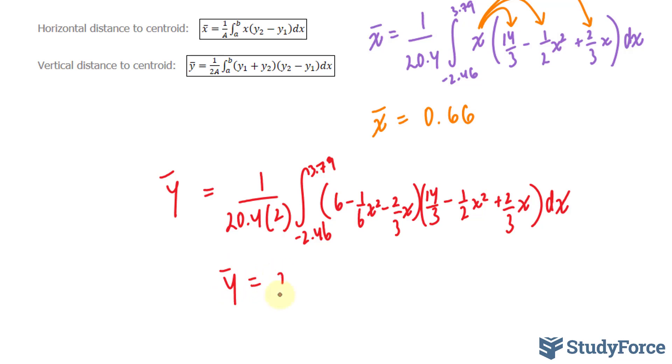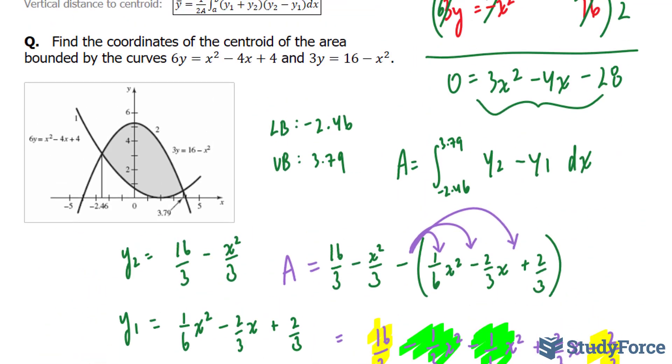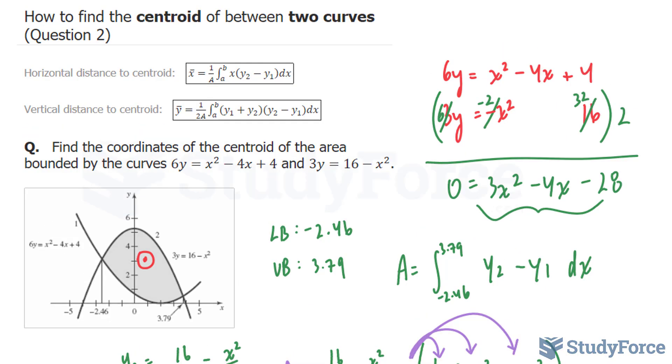Y bar is equal to 2.57. Therefore, our centroid lies at the point 0.66 and 2.57. Let's see if that is accurate according to the diagram. If this is 1, 0.66 would be a third of the way. And our other point was 2.57, which is up here. They're saying that the center of gravity lies right there. So there you have it. That is how to find the centroid between two curves.